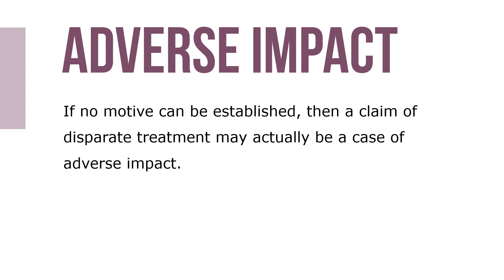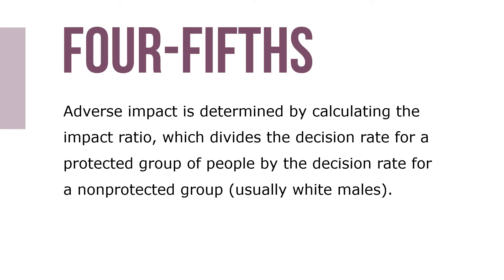A key element of discrimination lawsuits is establishing motive, meaning that the employer intended to discriminate. If no motive can be established, then a claim of disparate treatment may actually be a case of adverse impact. Adverse impact, which is unintentional discrimination, occurs when members of a particular race, sex, age, or ethnic group are unintentionally harmed or disadvantaged because they're hired, promoted, or trained at substantially lower rates than other people.